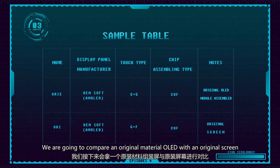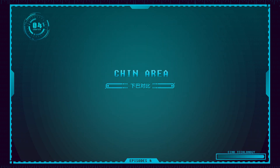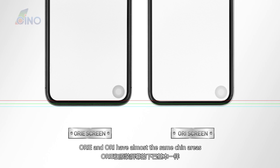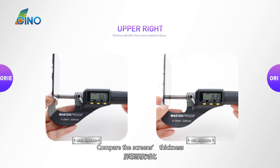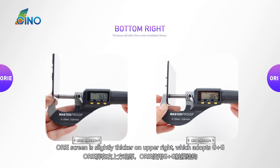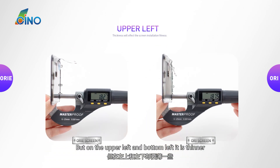We are going to compare an original material OLED with an original screen to see how close the two screens are. ORIE and original have almost the same chin areas. Comparing screen thickness, the ORIE screen is slightly thicker on the upper right, which adopts G plus G, but on the upper left and bottom left it is thinner.